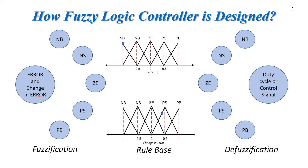We also calculate the rate of change of error. Then we divide or categorize these values into some parts. For now, I am categorizing them into five parts, but depending upon the performance you desire, you can divide into more or fewer parts.